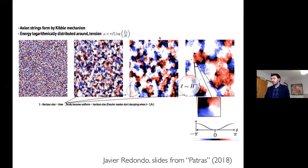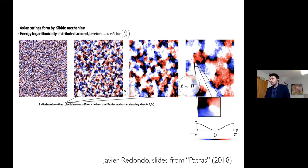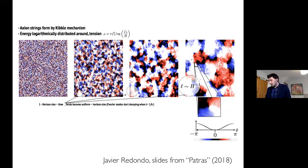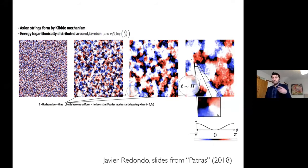Here is a diagram taken from a talk by Javi Redondo. It shows the distribution of the axion field over time as the horizon size grows. He's used a color scheme that wraps from minus pi to pi. You can see the axion field undergoes a complete winding around some points — these give the strings. As long as the axion potential is negligible, these strings are stable, but once the axion potential switches on, all these regions will go to zero and the strings will decay.